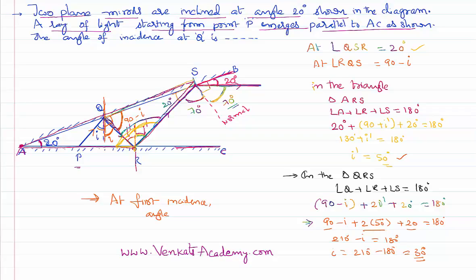The angle of incidence is proved to be 30 degrees. You may want to rewatch the video to understand the angles carefully. The key point is that in triangle ARS the full angle at R is used, whereas in triangle QRS a different portion of the angle at R is used. That's the only subtlety you need to observe carefully to solve this problem. Thank you for watching, keep coming back for more video lessons.